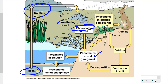In this dissolved form, phosphate is inorganic, meaning it is not attached to carbon. But once taken up by biological organisms, it will combine to form various different organic compounds, including ATP, DNA, RNA, and NADPH.